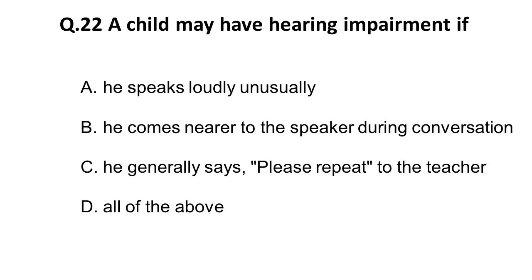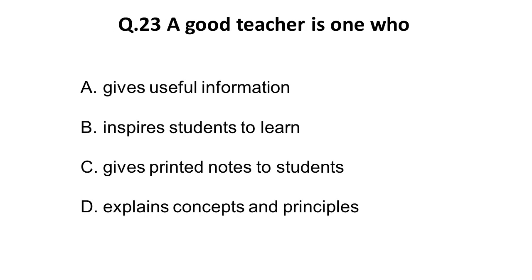The twenty-second question: a child may have hearing impairment if — he speaks unusually loudly; those who are hearing impaired generally talk in a louder voice. He comes nearer to the speaker during conversation — this is also one of the symptoms or characteristics. He generally says 'please repeat' to the teacher — this is also one thing. So the correct answer is all of the above to find hearing impairment in the child.